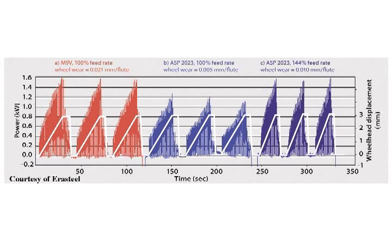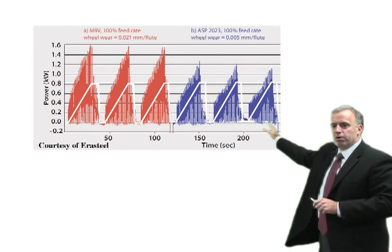Now we kept the exact same grinding parameters, the exact same dressing parameters, the same coolant, everything on the same machine. We ran through one steel grade, and then we ran through a steel grade that had higher grindability, or it was easier to grind, and then we got this power profile.